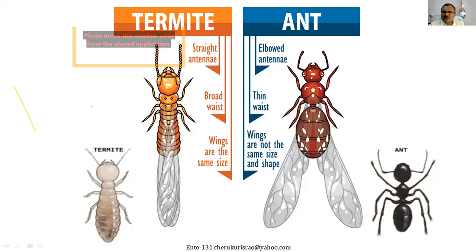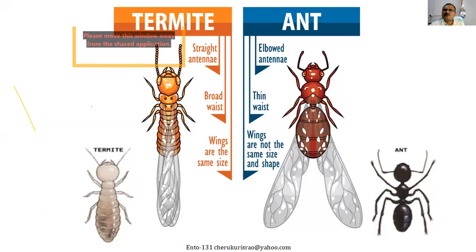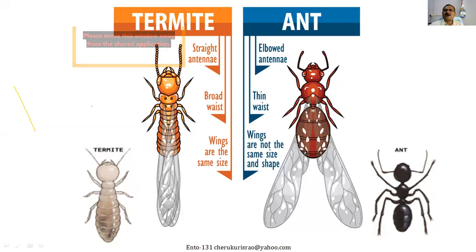Similar to termites, ants also have winged and wingless adults — but generally what you see are all wingless adults. As far as winged ants are concerned, the forewings are bigger and hindwings are smaller — the biggest difference. Termites belong to order Isoptera, whereas ants belong to order Hymenoptera, which is a holometabolous group with four stages in the life cycle: egg, larva, pupa, and adult. In termites there are three stages: egg, nymph, and adult.